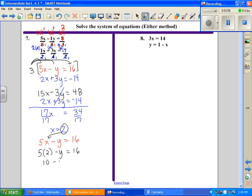Multiply 5 times 2 is 10, so 10 minus y equals 16. Get y by itself, subtract 10 from both sides, divide by negative 1, and y equals negative 6. The ordered pair is (2, negative 6).